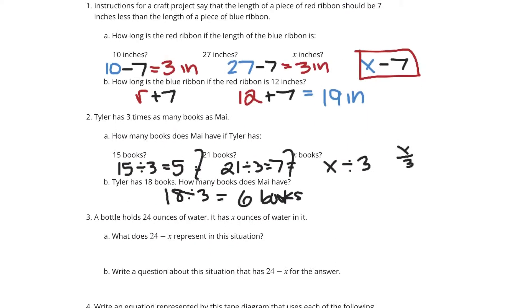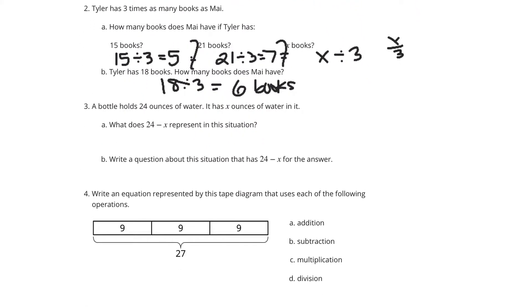Now a bottle holds 24 ounces of water. It has x ounces of water in it. What does 24 minus x represent in this situation? And that quite simply is the amount of water that has been removed from the bottle.